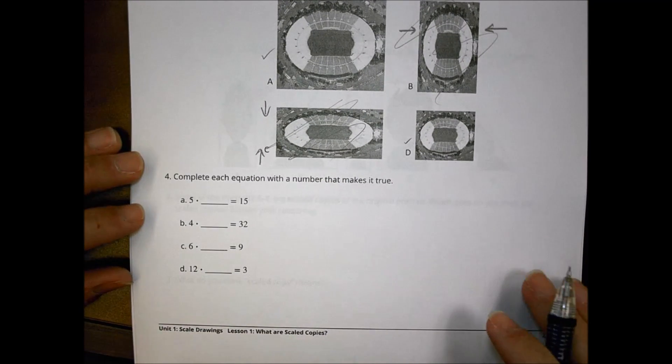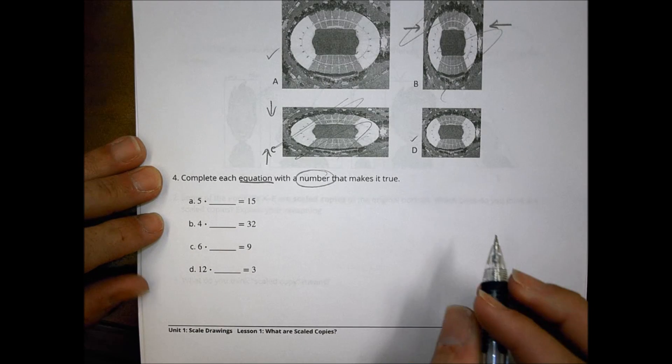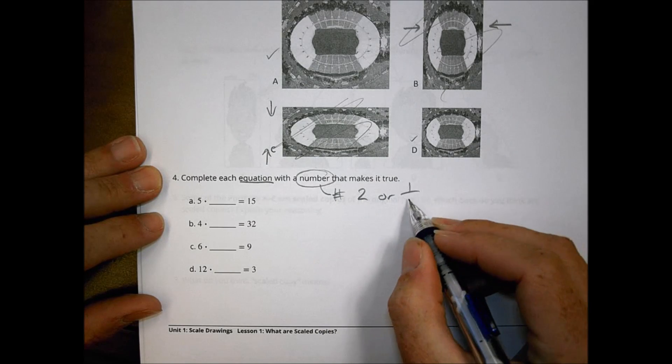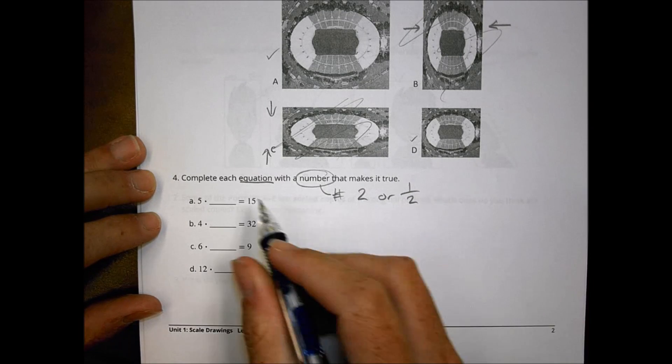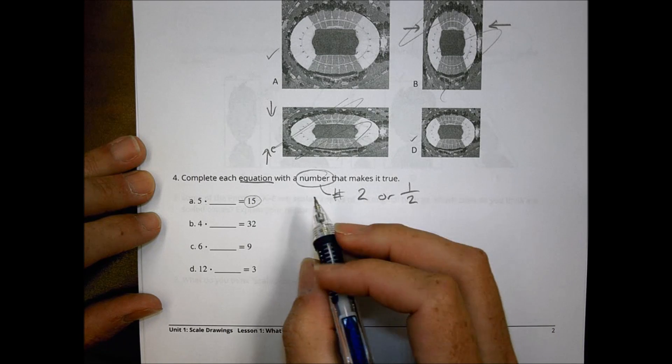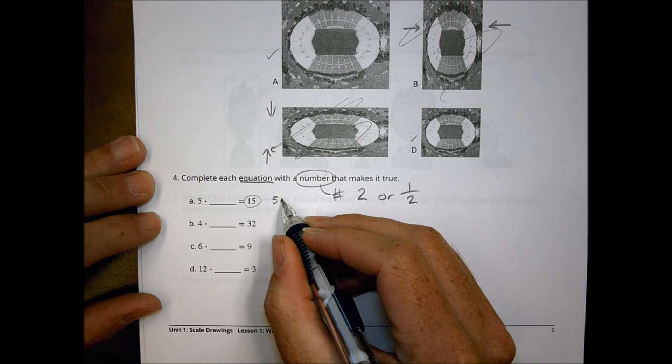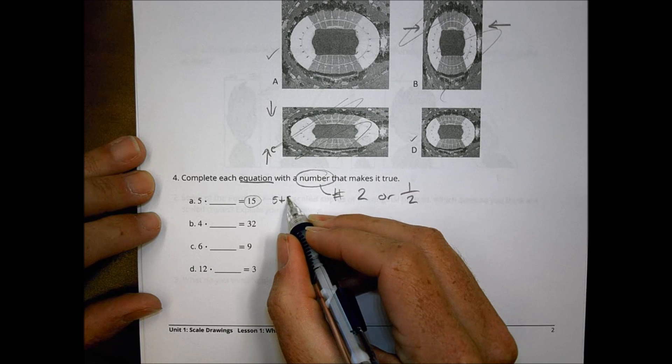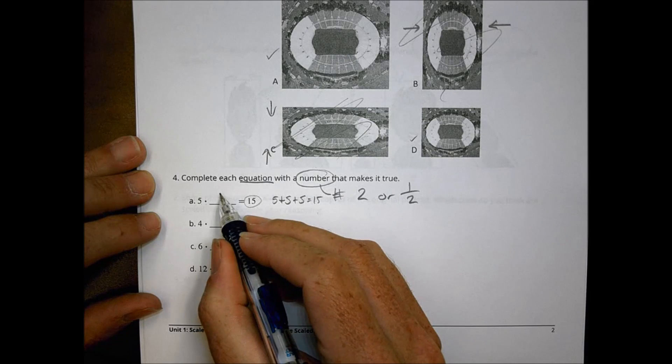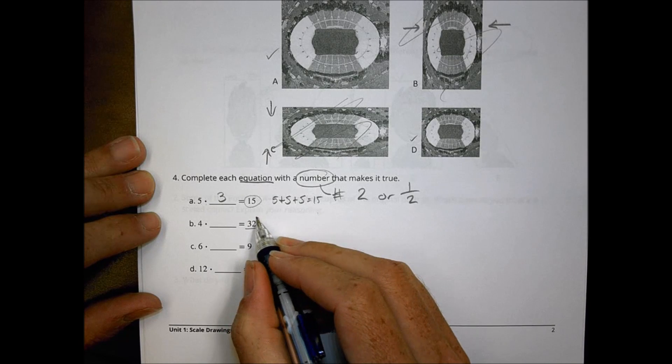For number four the last one we have a little bit of math here. We're looking to complete each equation with a number that makes it true and by a number it could be a number like two or it could be a number like a half depending on what we're wanting to do. So you can ask yourself five times what number gives you 15. You're thinking about math facts here. So this becomes five times how many fives is it going to take? Well five plus two fives plus three fives equals 15. So we would say three.